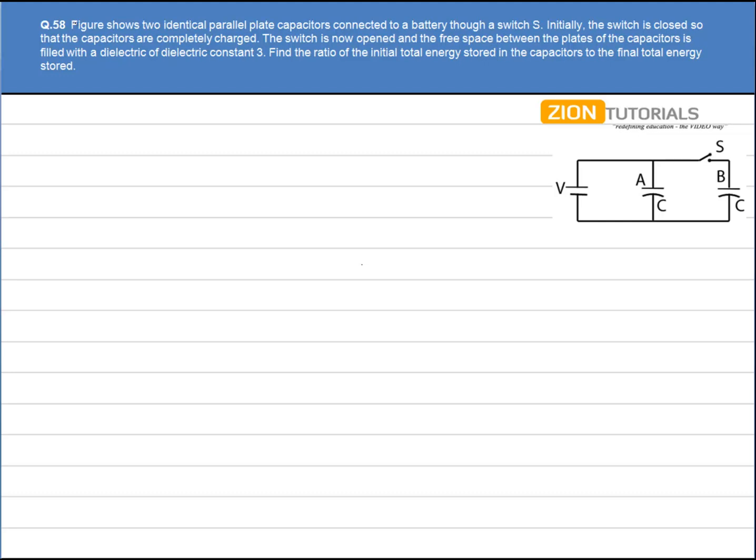In this figure, we have two identical capacitors that are connected in parallel through a switch and both are connected to a battery of potential V. Initially the switch S is closed, so the two capacitors are in parallel. The charge on each capacitor Q equals CV. So initial charge on both the capacitors is given by CV and CV.